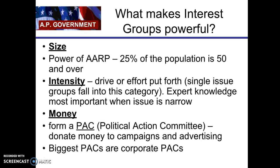What makes interest groups very powerful? Size really matters — how many members you have. Intensity, or the drive and effort you put forth, also matters. Single-issue groups tend to be more intense even though they have a smaller size. Money can make interest groups quite powerful. Remember, most interest groups will typically form a PAC — a political action committee — or even a super PAC. Those PACs donate money to individual campaigns or do independent advertising. The biggest PACs tend to be corporate or big business PACs, but not all of them.